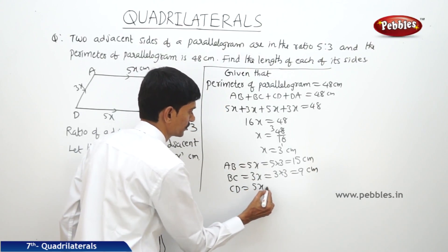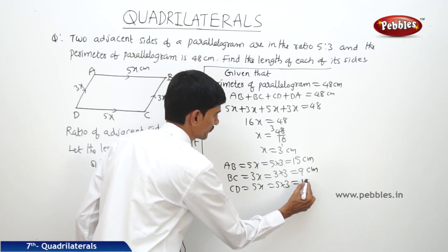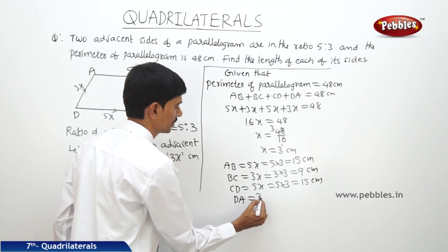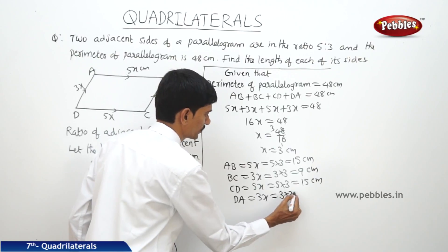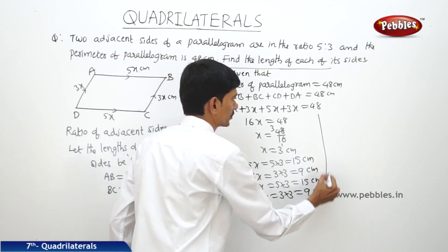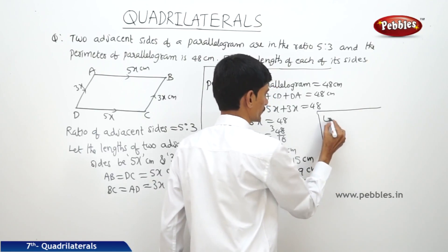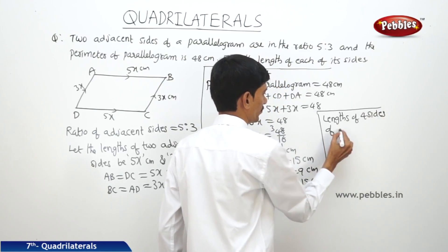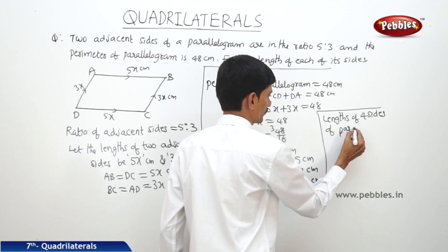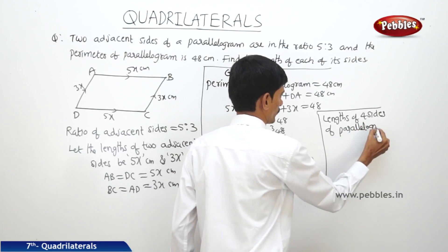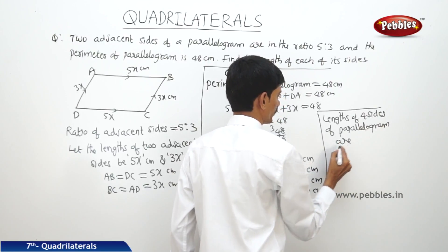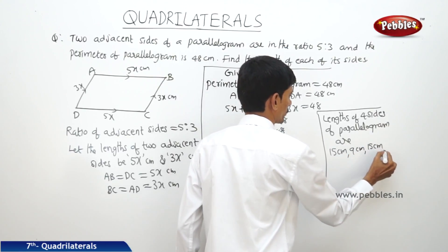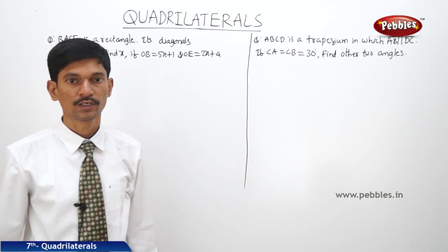Again, CD equals 5x equals 5 into 3 equals 15 centimeters, and DA equals 3x equals 3 into 3 equals 9 centimeters. So the lengths of the four sides of the parallelogram are 15 centimeters, 9 centimeters, 15 centimeters, and 9 centimeters.